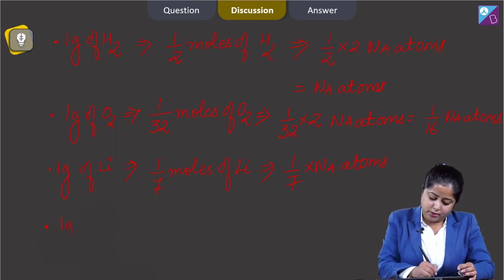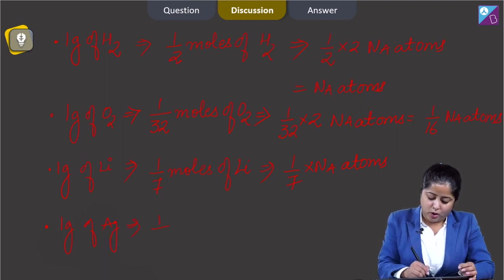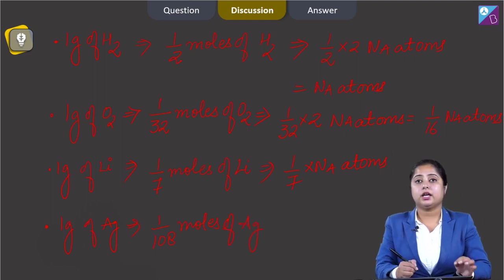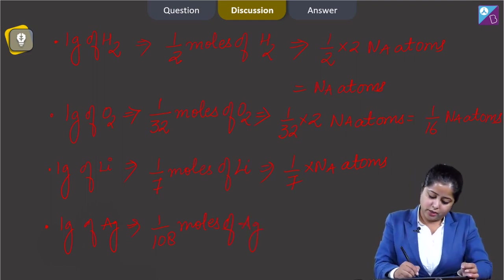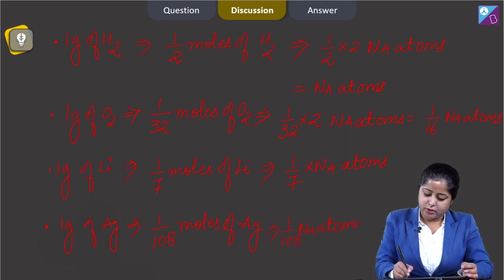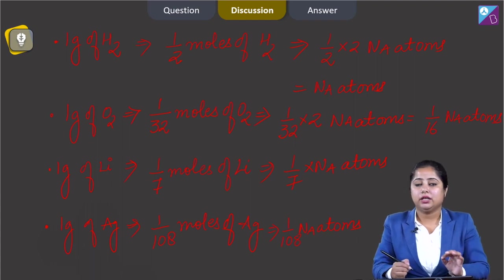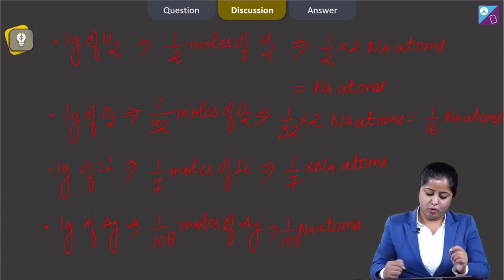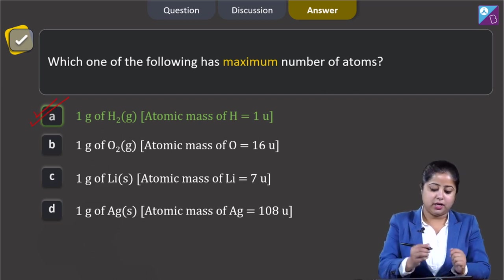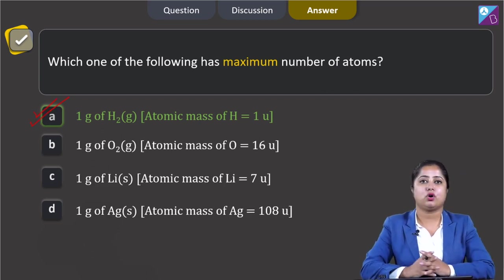The last option is 1 gram of Ag: number of moles = 1/108, since the atomic mass of silver is 108, which gives 1/108 × NA atoms. It is very clear that the maximum number of atoms are present in 1 gram of H2, so the correct answer is option number 1.